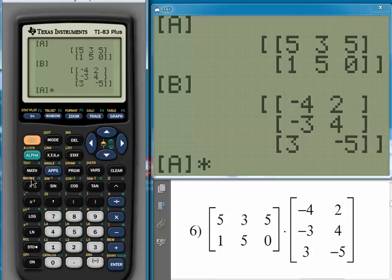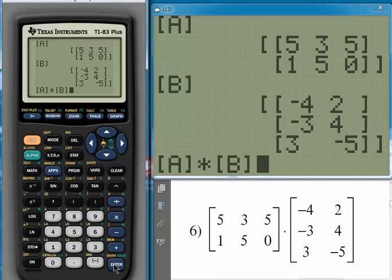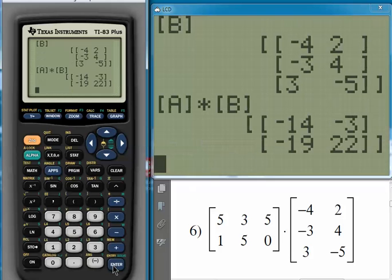and then we fetch the name, or the label, of matrix B. A times B. And quick as a wink, it multiplies out the matrices. That's how it's done.